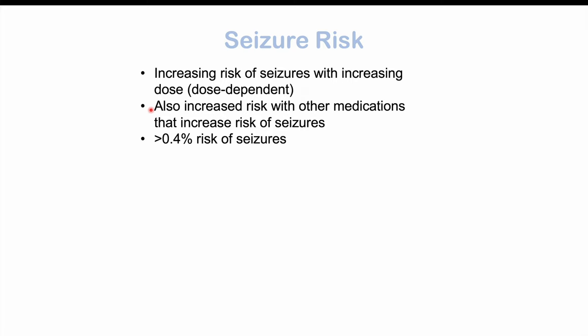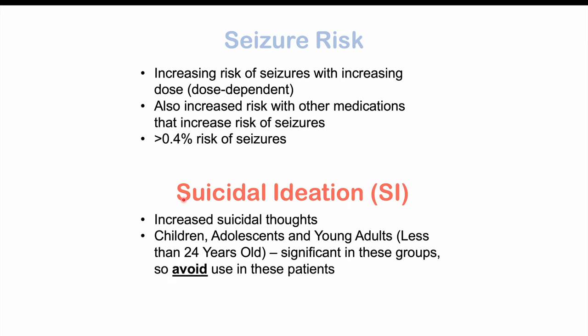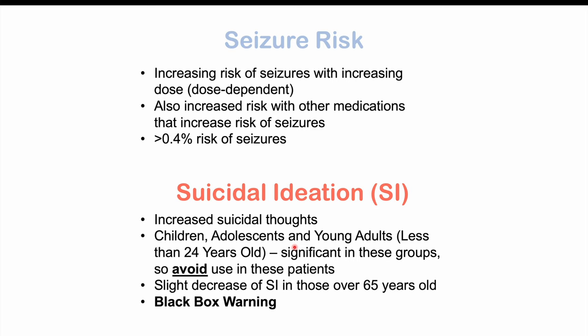At some of the higher doses, you may have a seizure risk of roughly three percent. Another very important side effect to look out for is suicidal ideation — increased suicidal thoughts. This is very particular with regard to younger patients: children, adolescents, and young adults less than 24 years old, in whom this can increase the risk significantly. You should not use this medication in patients less than 24 years old. Interestingly, in those over 65 years old, there may actually be a slight decrease in suicidal ideation. Suicidal ideation is the black box warning for this medication.